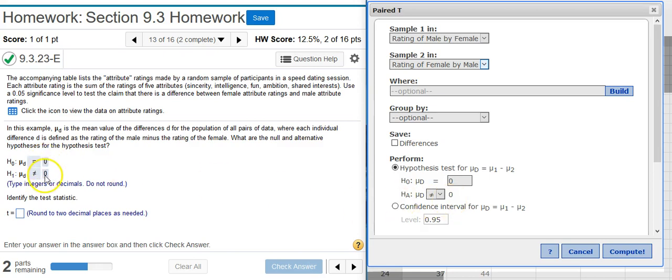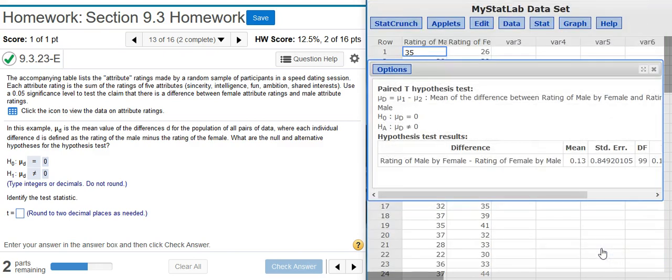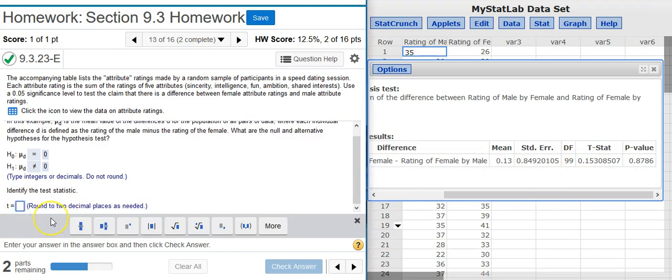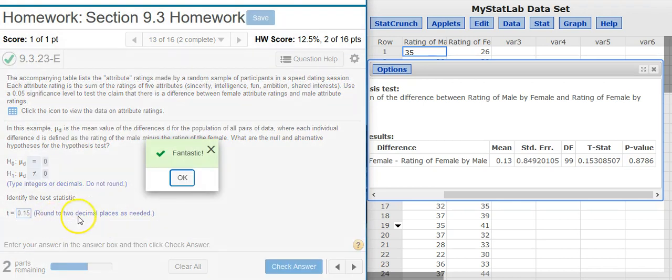If there were changes needed, then we could make them. We want to make sure that these fields here match the null and alternative hypothesis for our particular situation. Once you get that matched up, there's nothing else to do, so just press Compute. And in the results window, here on the end of the table, is your test statistic. I'm asked to round at two decimal places. Fantastic!